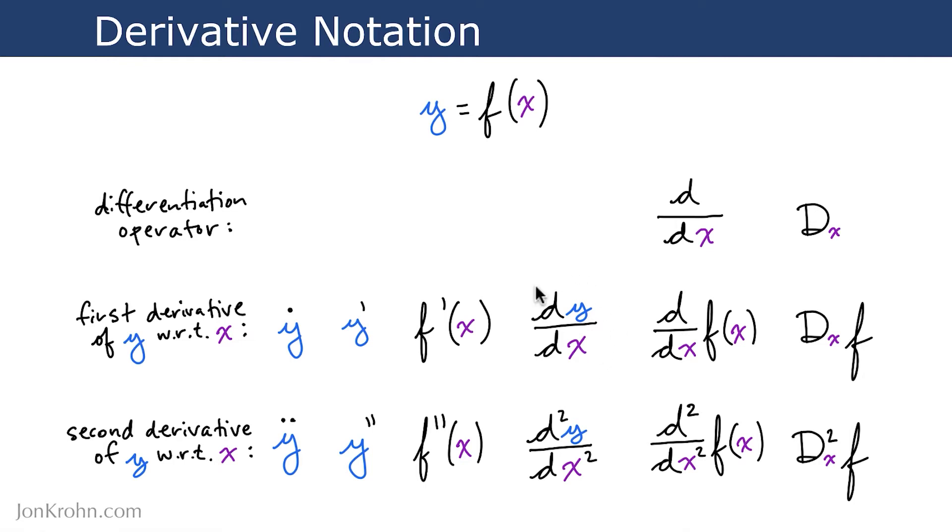I mentioned then that the Leibniz notation is my favorite, and the reason for that is that the Leibniz notation includes both of the variables that we're working with, in this case y and x. So it makes it clear exactly what we have the derivative of, and it makes it easier, in my view,